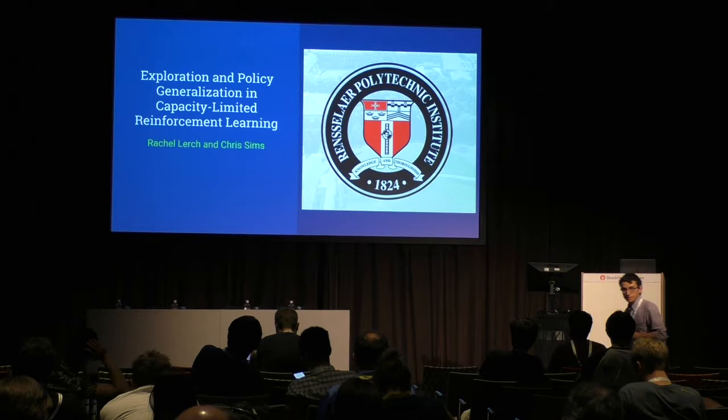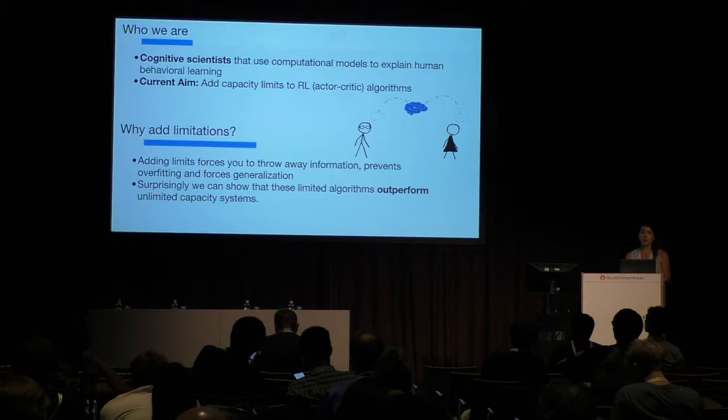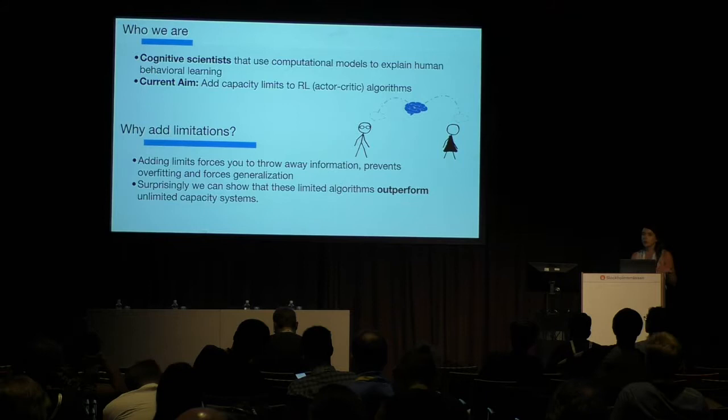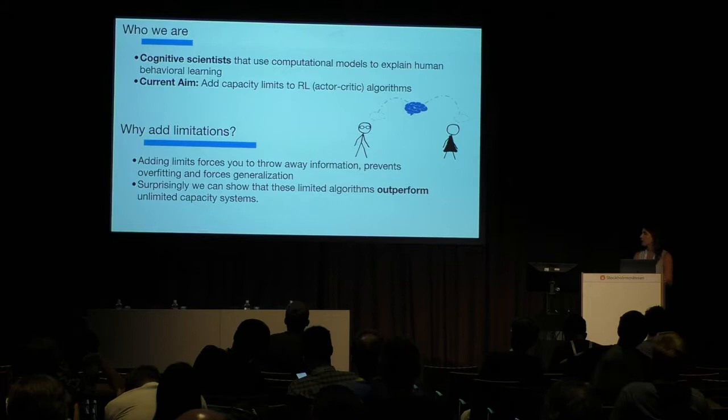Hello, everyone. My name is Rachel Lurch, and we're from Rensselaer Polytechnic Institute in Troy, New York. We are cognitive scientists using computational models to explain human behavioral learning, with the aim of adding capacity limits to reinforcement learning algorithms. Why add limitations? By adding limits, this forces you to throw away information, prevents overfitting, and forces generalization. Surprisingly, these limited algorithms can outperform their unlimited counterparts.